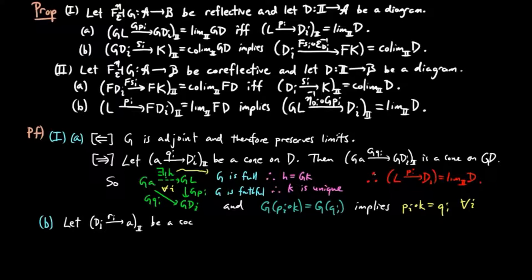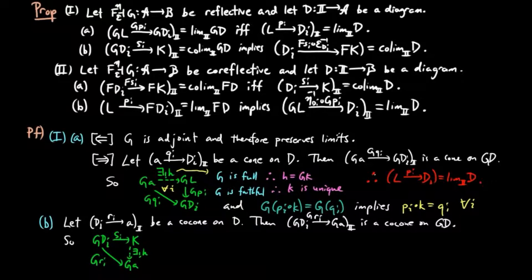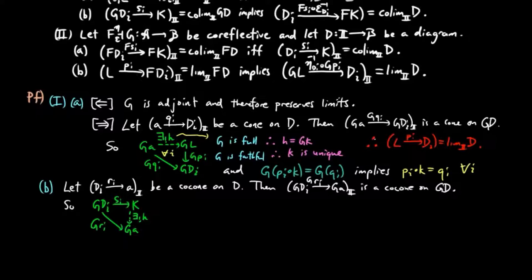For B, let RI be a co-cone on D. Then GRI is a co-cone on GD. So by the universal mapping property of K, there exists a unique factorization H from K to GA such that HSI is equal to GRI for each I.